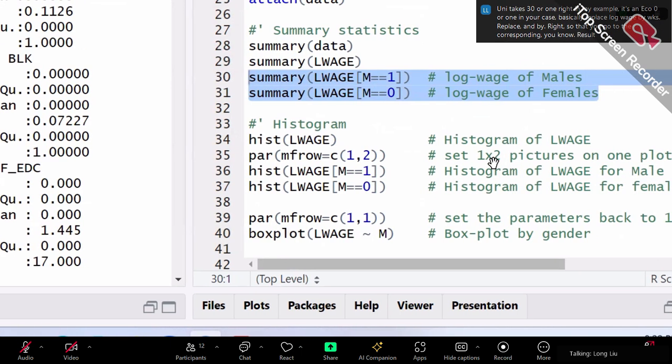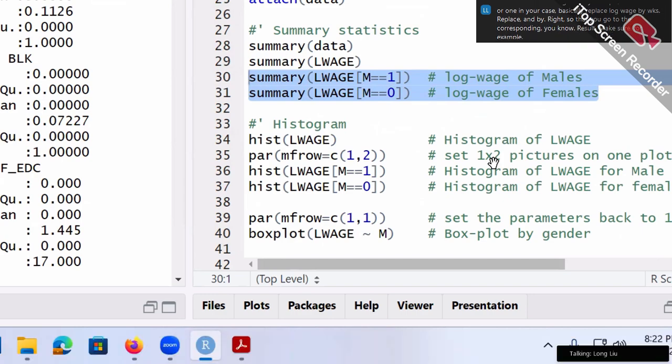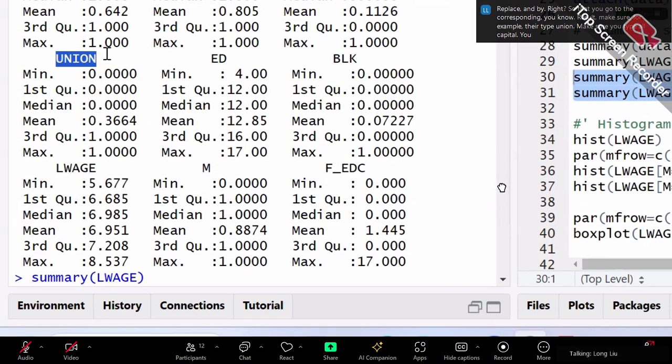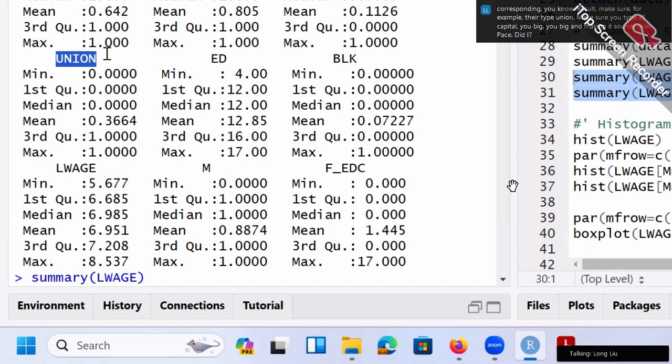A technical detail. Make sure, for example, when you type union, make sure you type all capital U, big U, big N, big N. It sounds like a better copy and paste. Did I mention this to you? R is case sensitive. In other words, little X and big X, totally different. So that right here, if you type little union, then the computer is going to say sorry, we don't have such a variable, little union. Make sure you type capital. Again, do the better copy and paste so that you don't make mistakes.